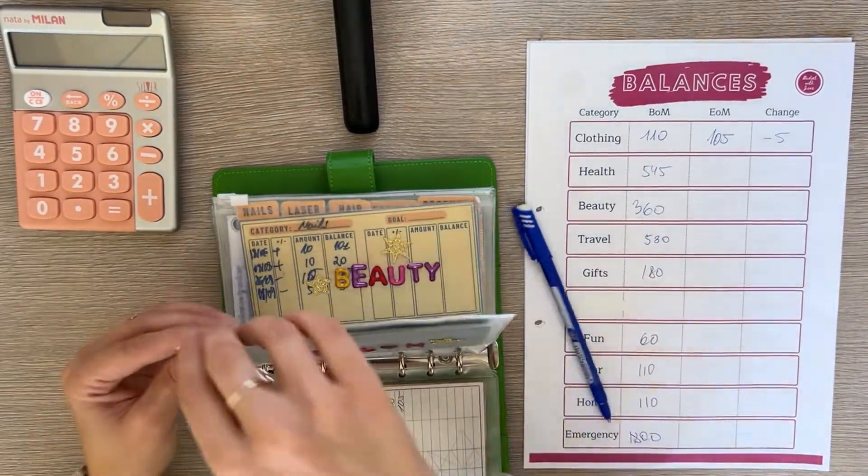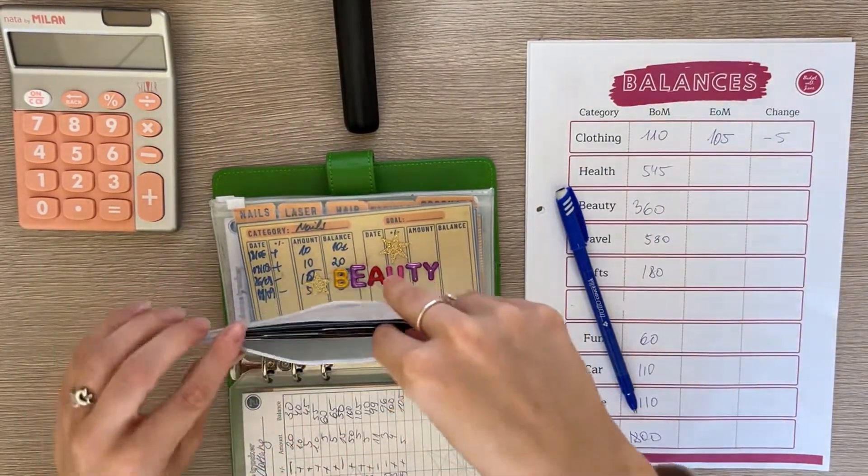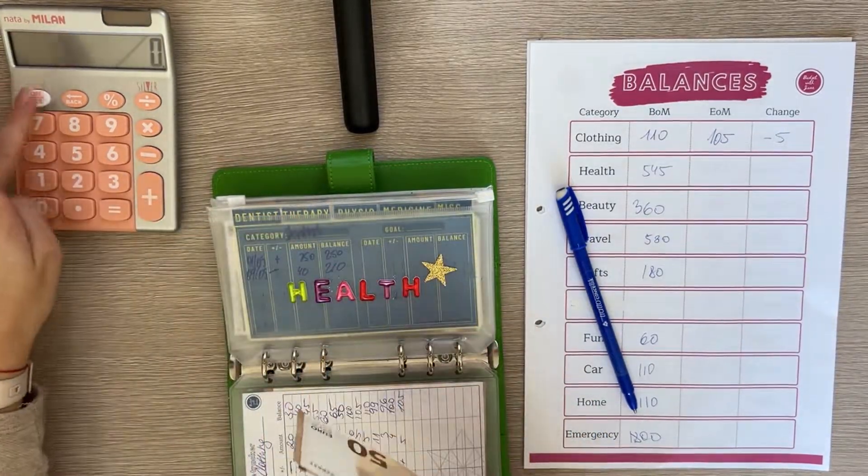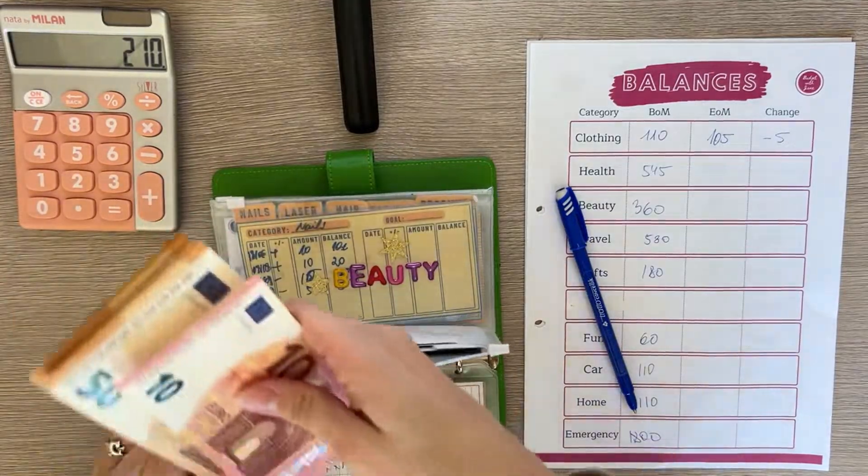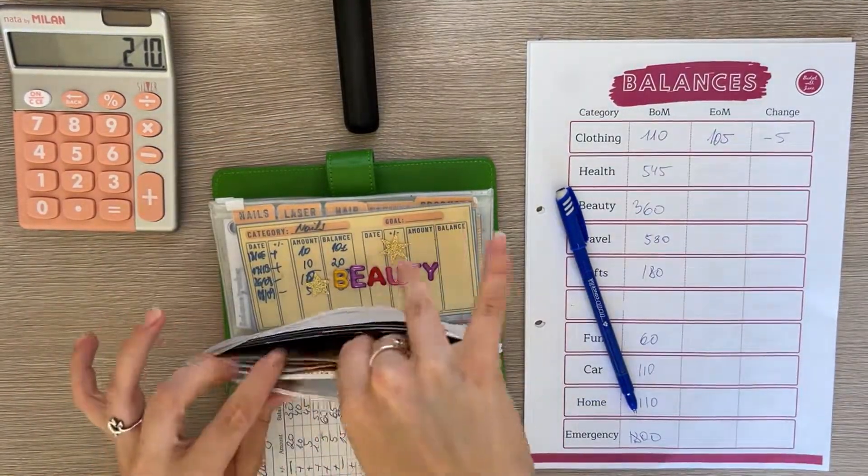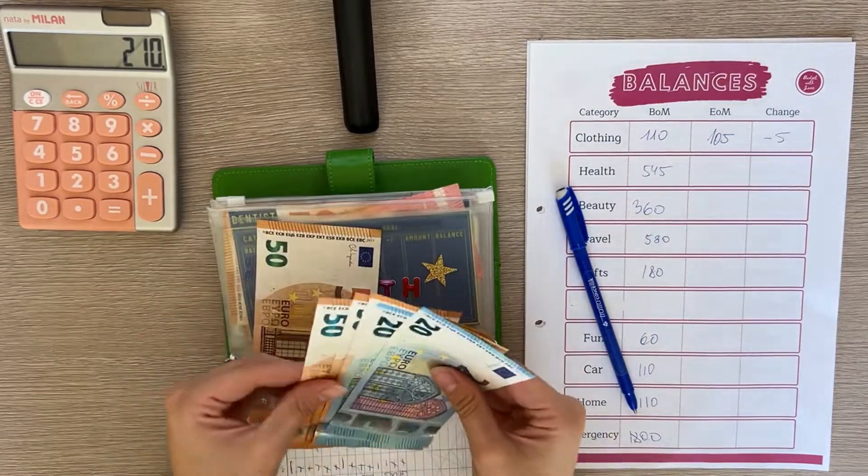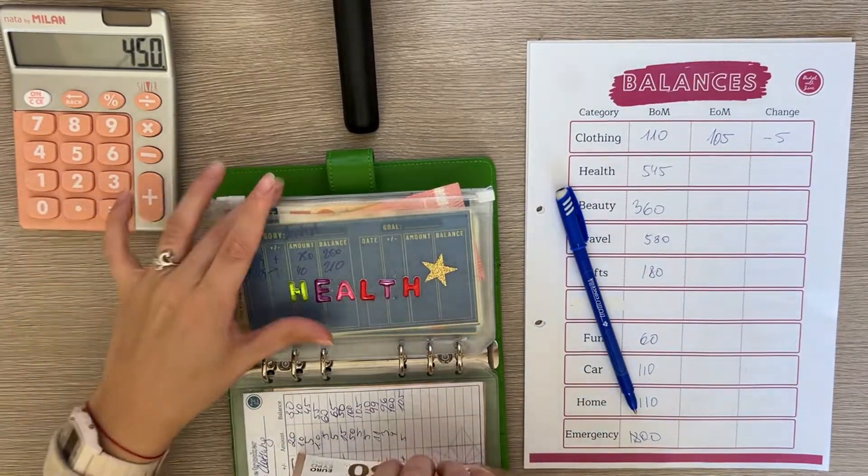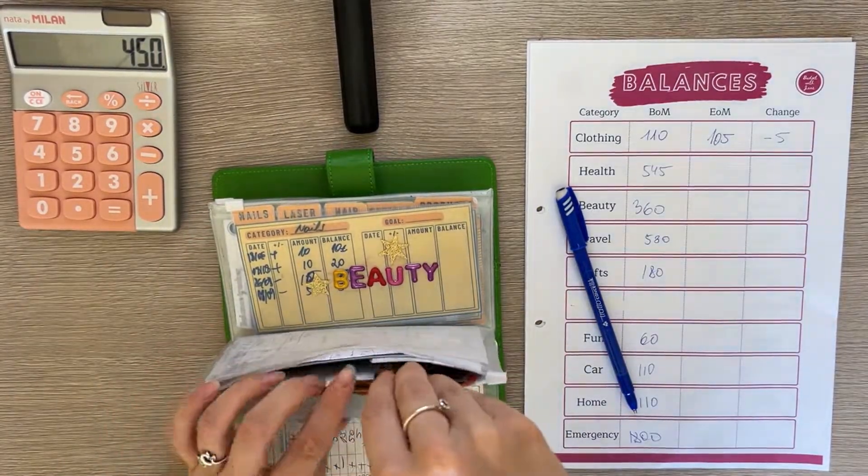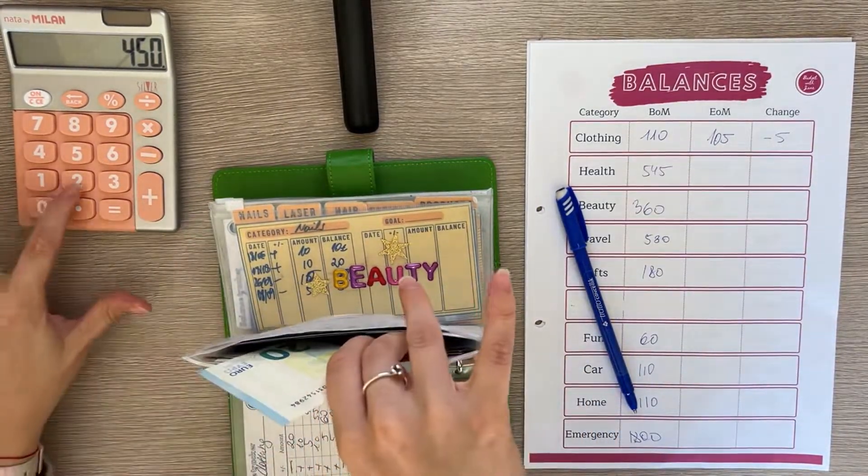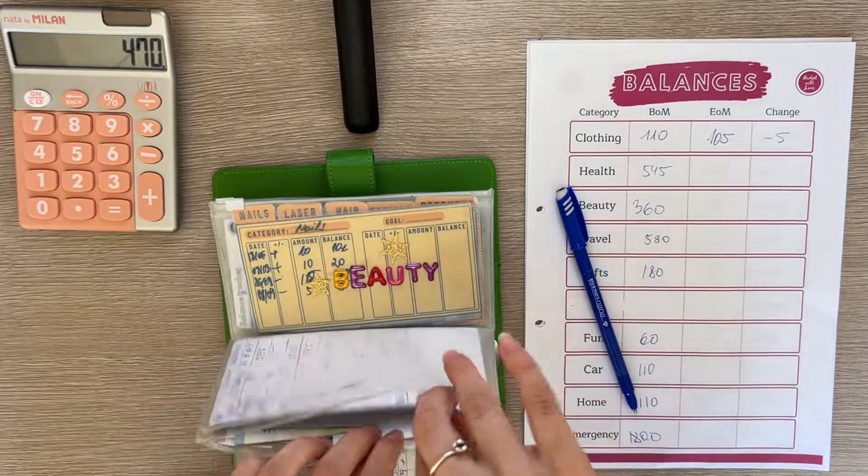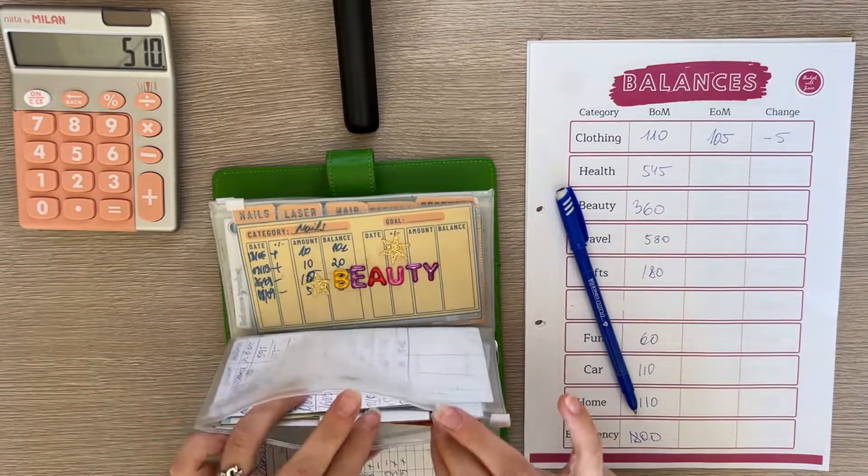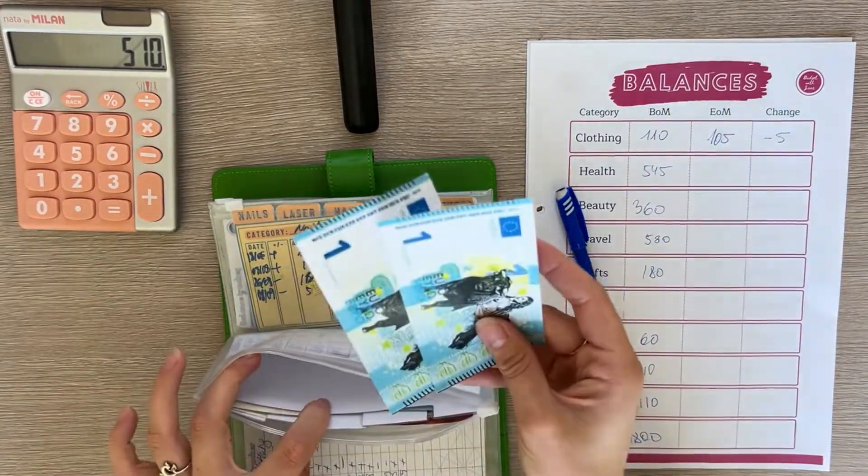Health, let's see. We have $210 in dentist, plus $240 in therapy, plus $20 in physio, plus $40 in medicine, plus two in miscellaneous.